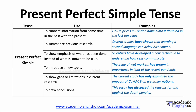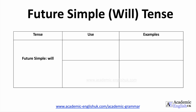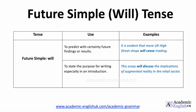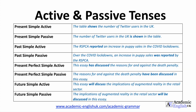Our final tense is the future simple with will. This has importance for two main reasons: first, to predict with certainty future findings or results, and also to state the purpose for writing, especially in an introduction. Of course, don't forget that all four tenses can be used in the active or passive form, so please pause this slide to see how the tense structure changes in both of these forms.